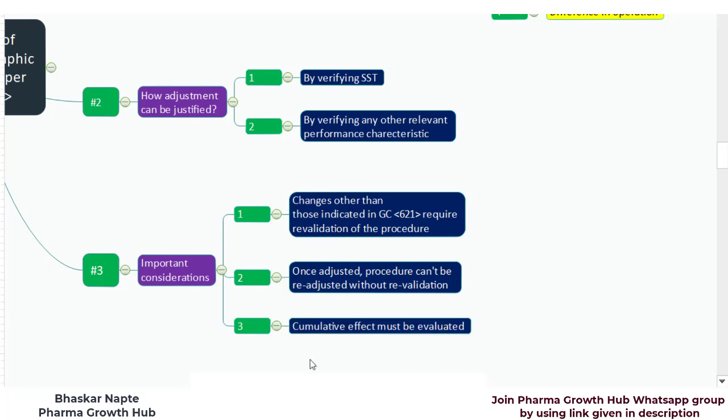The cumulative effect must be evaluated. If you are trying to change multiple parameters — parameters belonging to the column, parameters belonging to the mobile phase, and parameters belonging to injection volume — all of these changes together can contribute, possibly negatively, to your relevant performance characteristics. So you must understand the influence of contributing changes because of the cumulative effect you are trying to bring in.